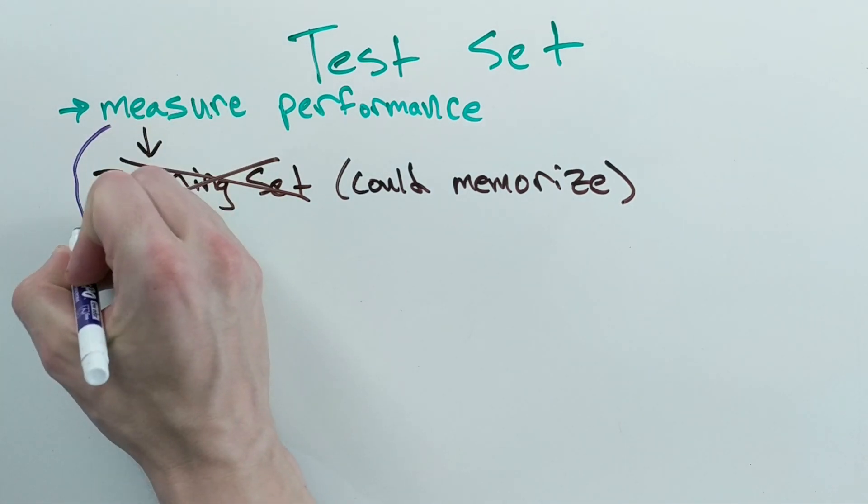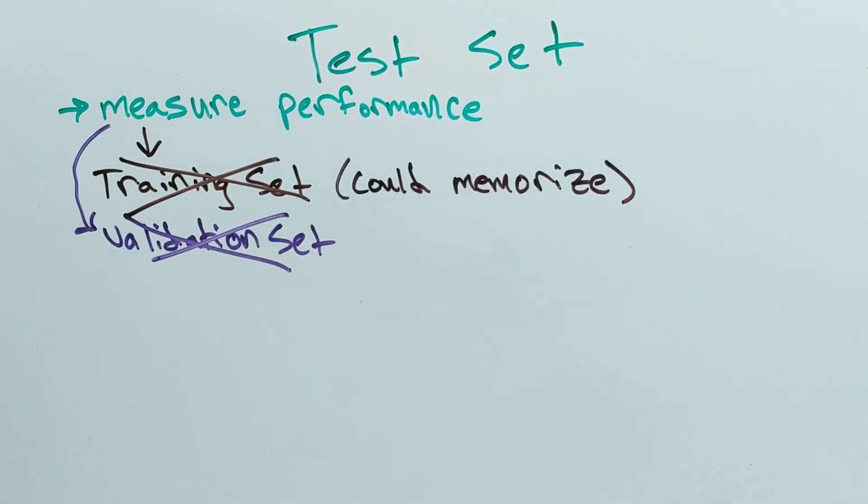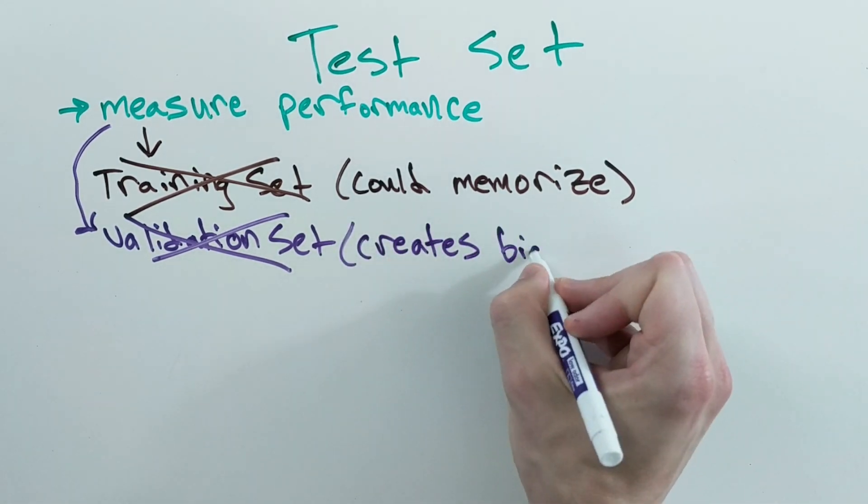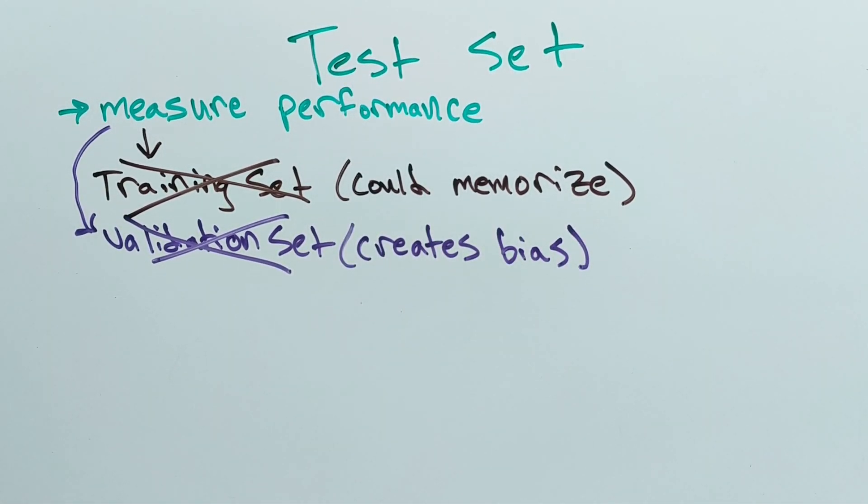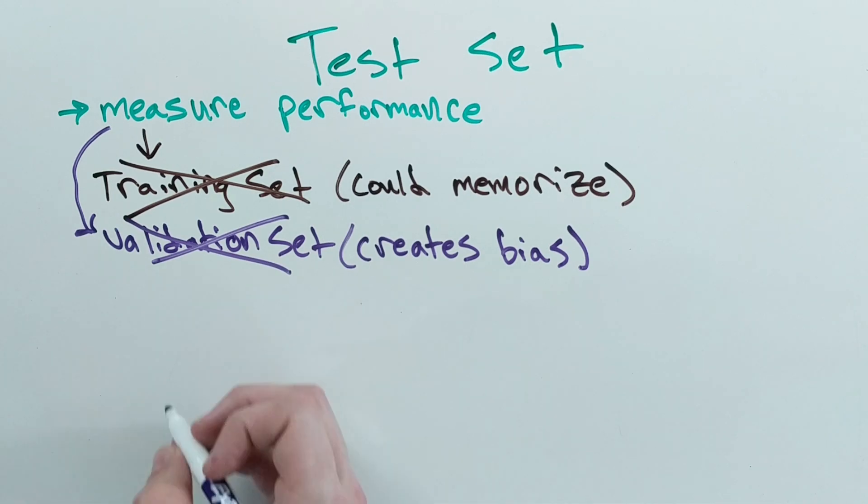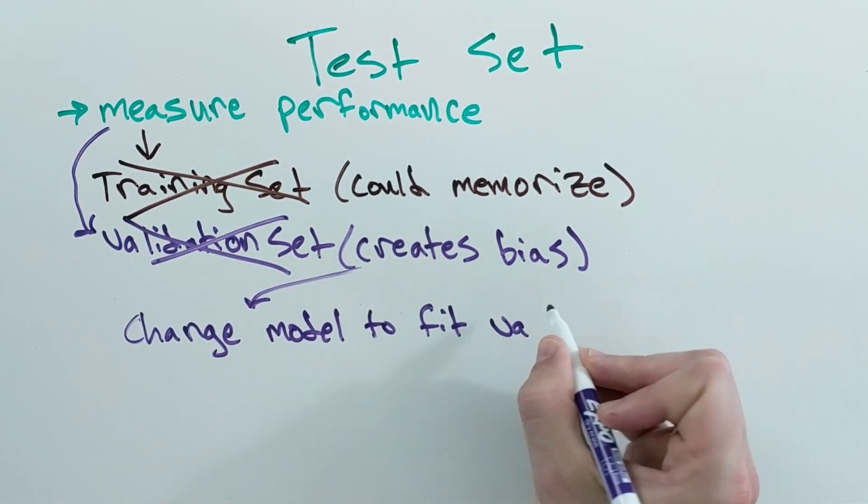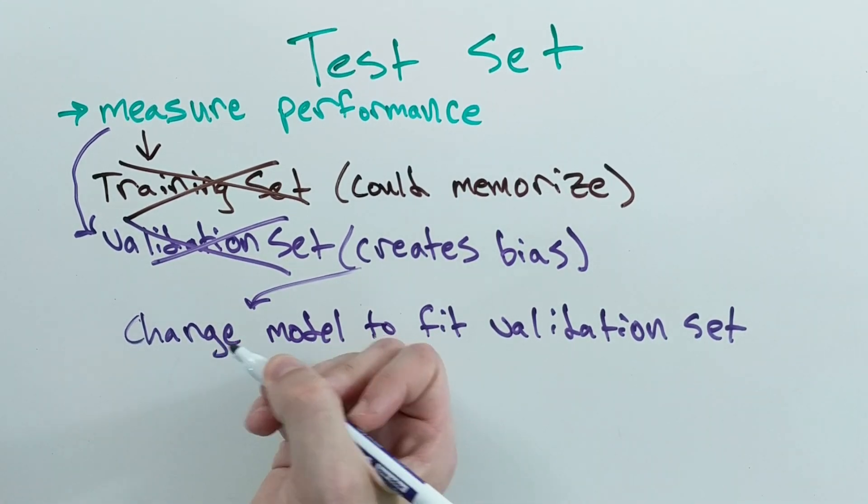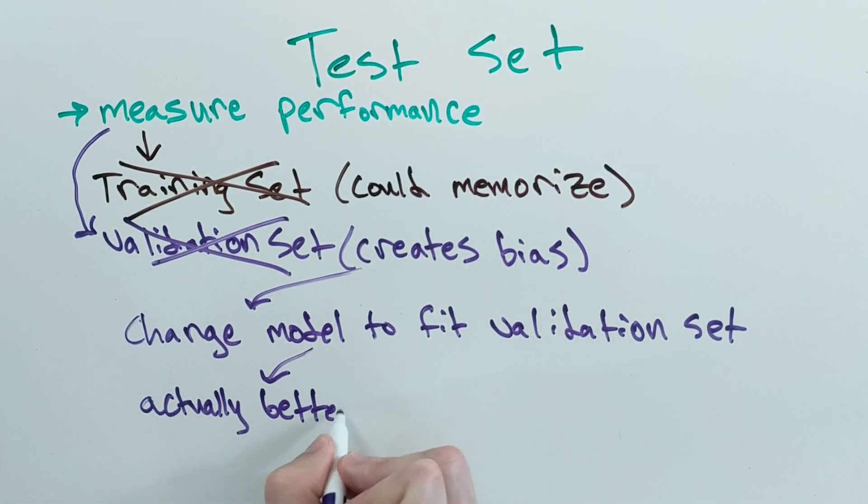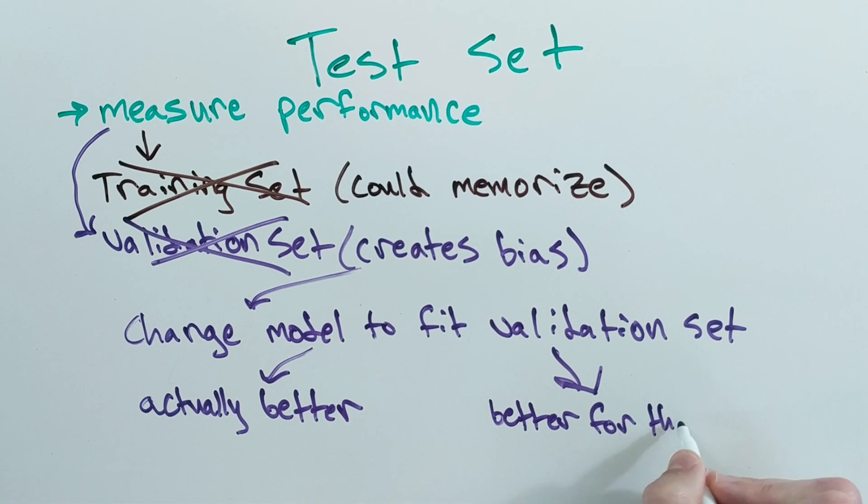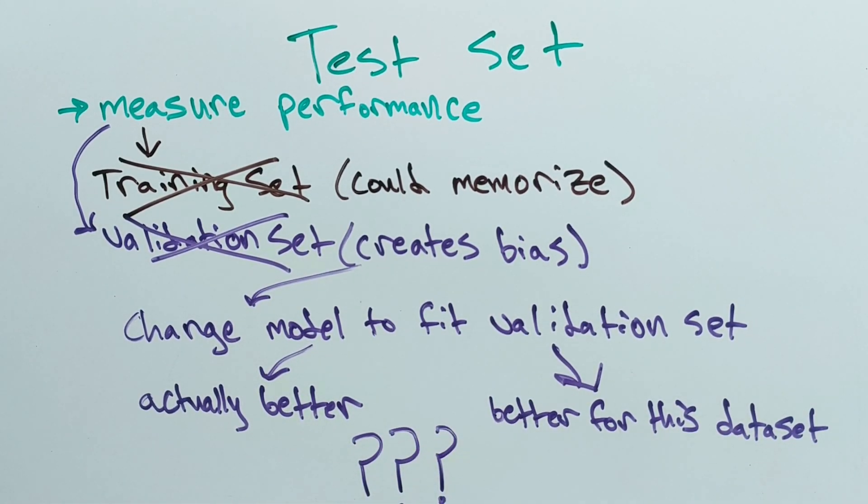You can't use the validation dataset to get this reading because you choose a model based on the performance of the validation set, which creates model bias. Basically, you have no idea if the extra performance you achieved from changing your model hyperparameters was because the parameter change was the right move, or because that model just happened to perform better on the validation dataset.